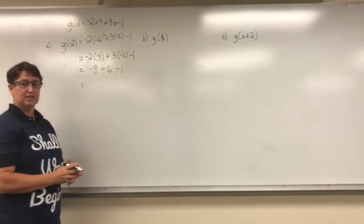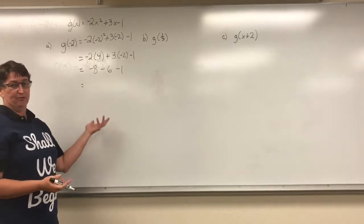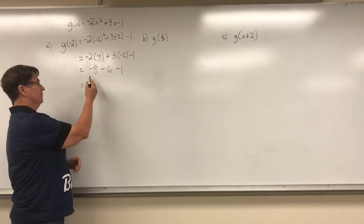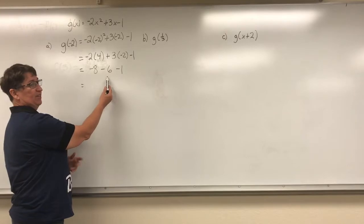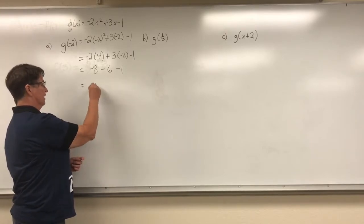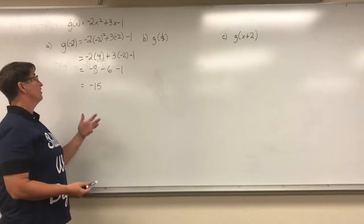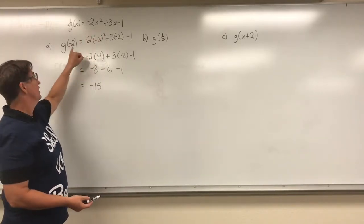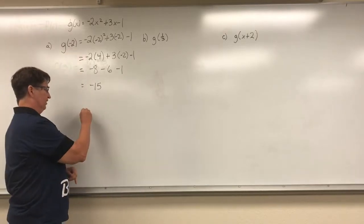And last but not least, using those order of operations, I add or subtract. So here I'm going to add these numbers together. Negative 8 and a negative 6 is a negative 14, and a negative 1 gives me a negative 15. So what I've just found is that there's a point on this quadratic function at negative 2, negative 15.